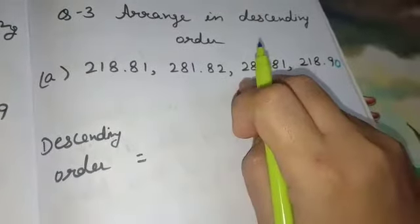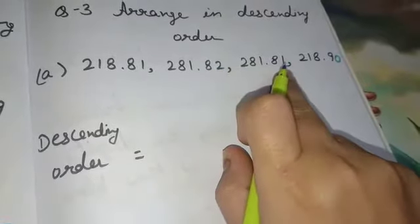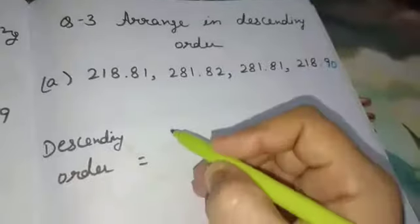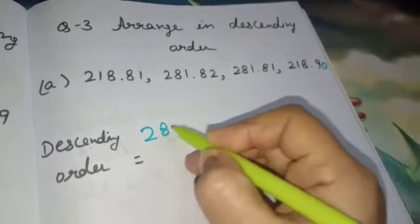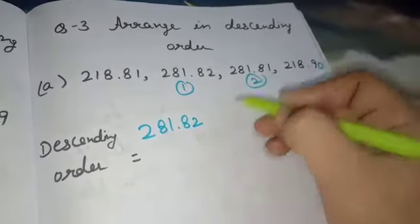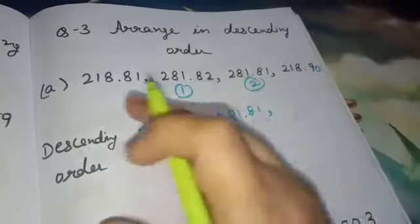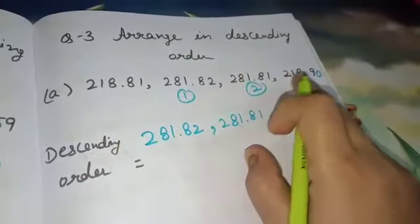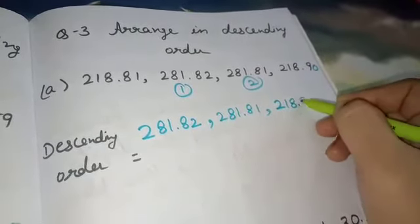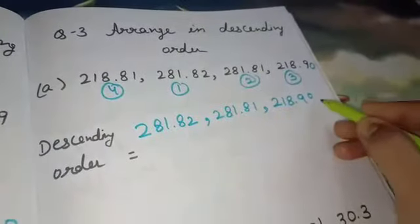Comparing 281 and 281 — the tenths digit is 8 and 8, which is the same. Then compare the next: 2 and 1. So 281.82 is the bigger one and comes at first place, and 281.81 comes at second place. Now thinking about third and fourth: 218.90 is bigger so comes at third place, and 218.81 comes at fourth place.